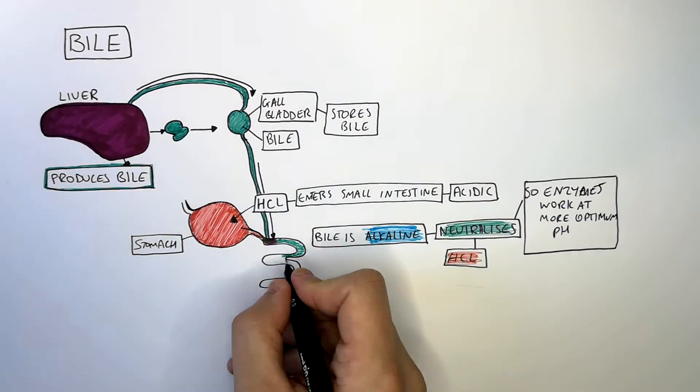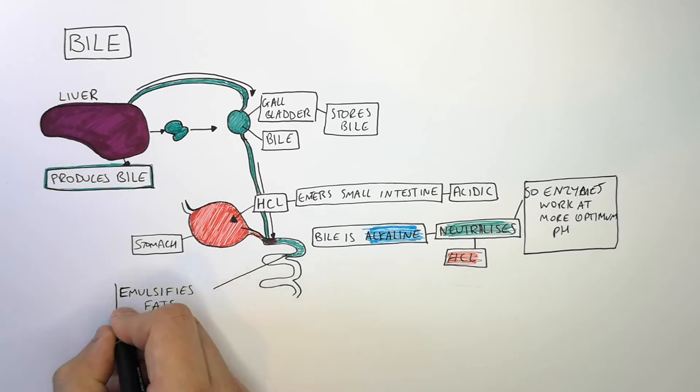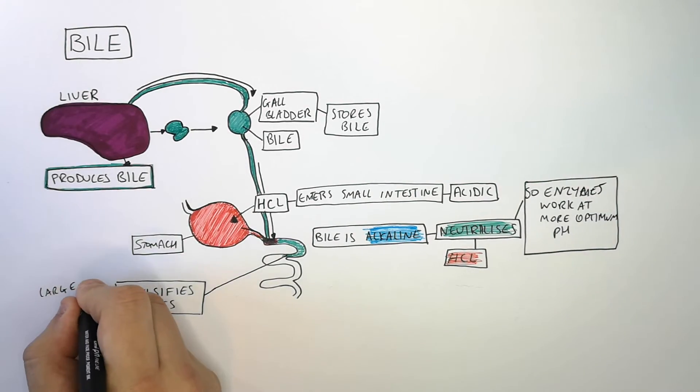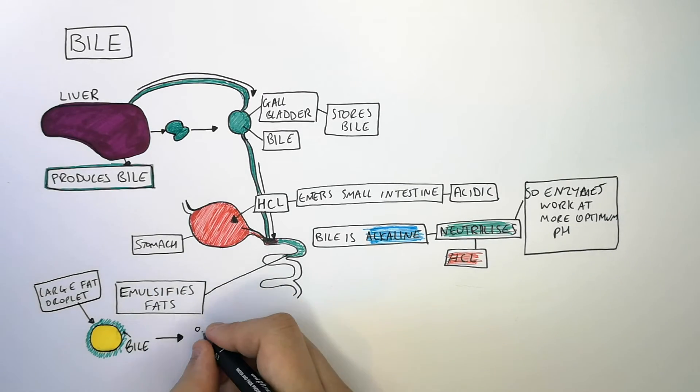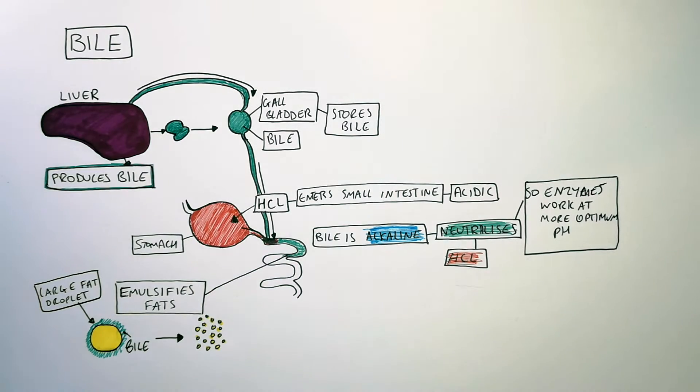The other function of bile is that it emulsifies fats. That means the bile is going to turn a large fat droplet that you've eaten into smaller, tiny fat droplets. Large fat droplets have a low surface area.